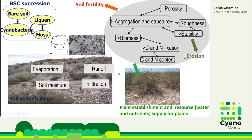Biocrusts regulate water movement in the soil and also water retention — the water balance. They influence evaporation, soil moisture, runoff, and infiltration. They also modify a lot of soil variables that affect soil fertility and stability. They increase aggregation, surface roughness, and stability, and they usually increase the carbon and nitrogen contents of the soil. So they reduce erosion and increase soil fertility.